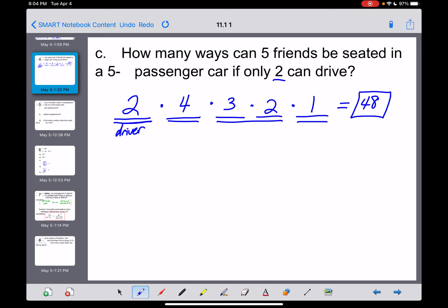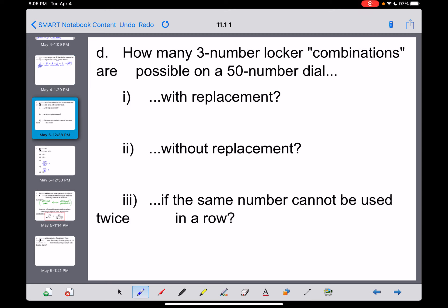So those are three examples, guys, of what the fundamental counting principle looks like. You're basically just multiplying options. Okay, and I had one more for you right here. And this is actually a little harbinger of what's going to come later on in this section right here. I'll come back to it in a bit. How many three-number locker combinations are possible on a 50-number dial? And if I'm not mistaken, you guys at DHS have lockers that have 50 numbers on the dials there. And I've thrown a couple of phrases at you here that we haven't talked about, but I bet if you think about it, you can probably figure out what it means. With replacement and without replacement.